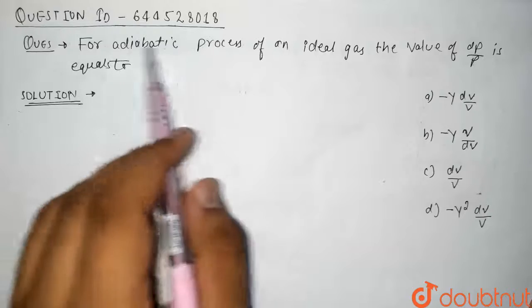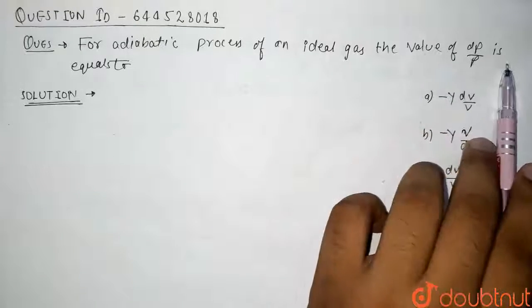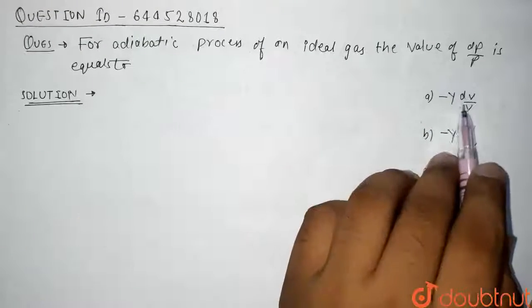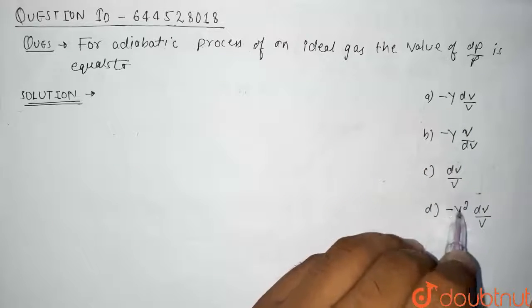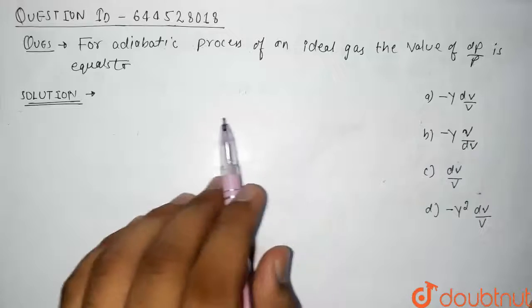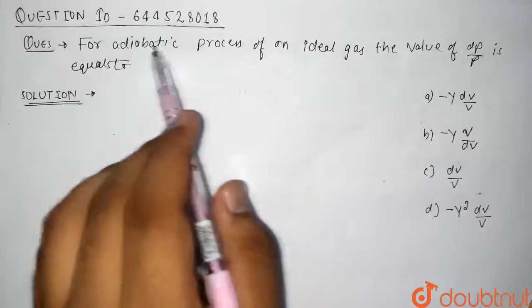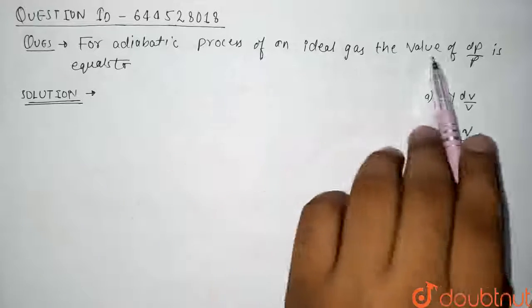For adiabatic process of an ideal gas, the value of dp/p is equal to: a) -γ dv/dv, b) -γ v/dv, c) dv/v, or d) -γ² dv/v. In this question we have been asked that for an adiabatic process of an ideal gas, the value of dp/p.